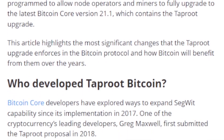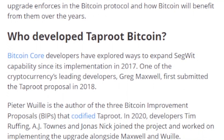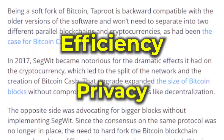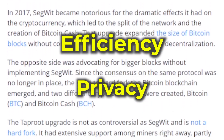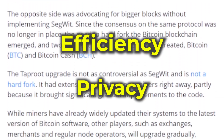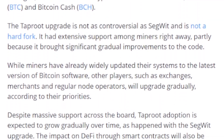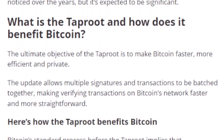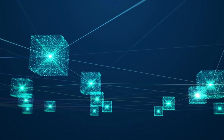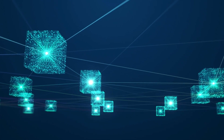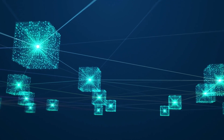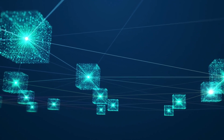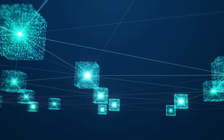Ordinals are largely possible because of the Taproot upgrade that was implemented onto the Bitcoin network in November 2021. This soft fork upgraded several aspects of the Bitcoin network, including its efficiency and privacy. It also allowed for data up to 4MB — the maximum possible size of a Bitcoin block — to be put onto the blockchain. This is important because ordinals are stored directly on the Bitcoin blockchain, which means that they are limited by the amount of room on each block.